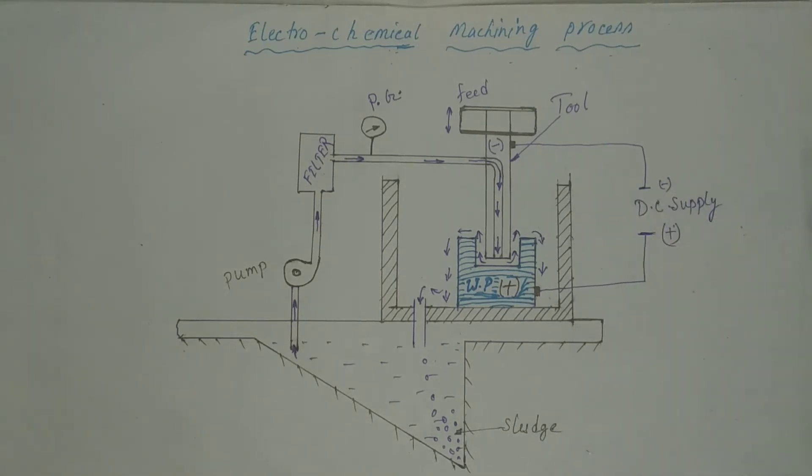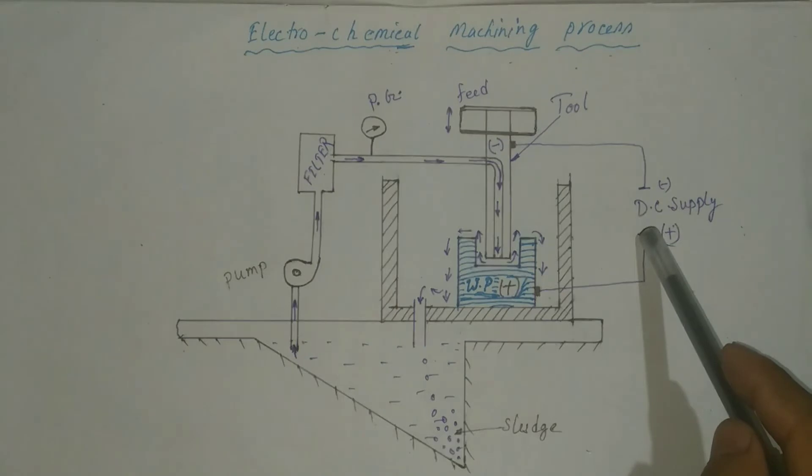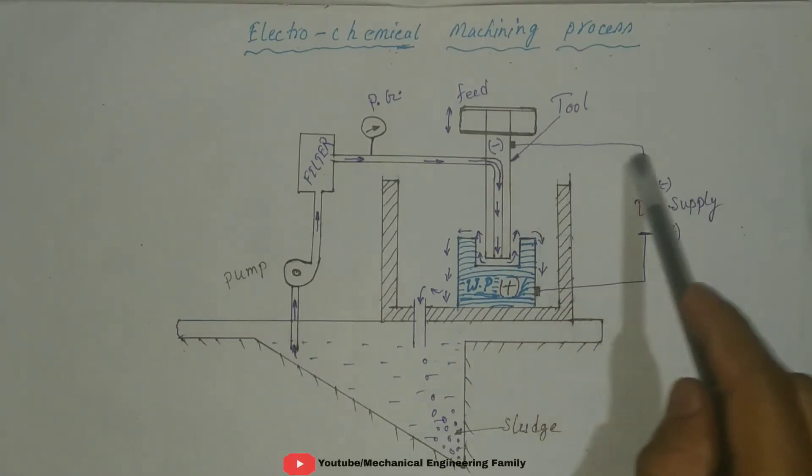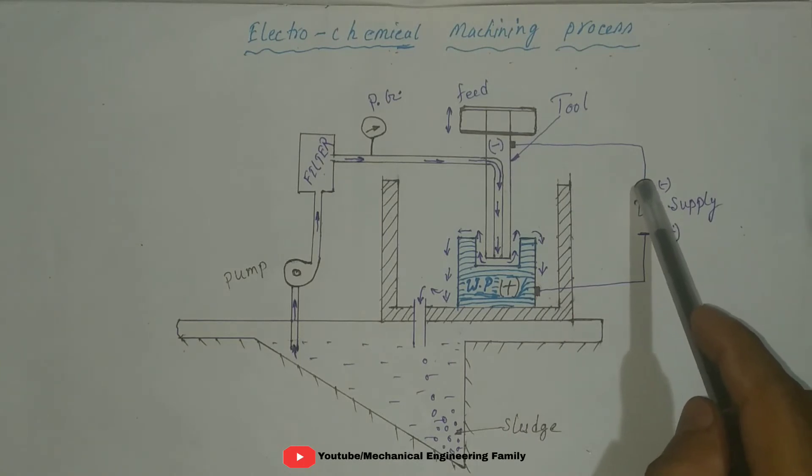This is DC power supply. The workpiece is connected with the positive terminal of DC power supply and the tool is connected with the negative terminal of DC power supply.